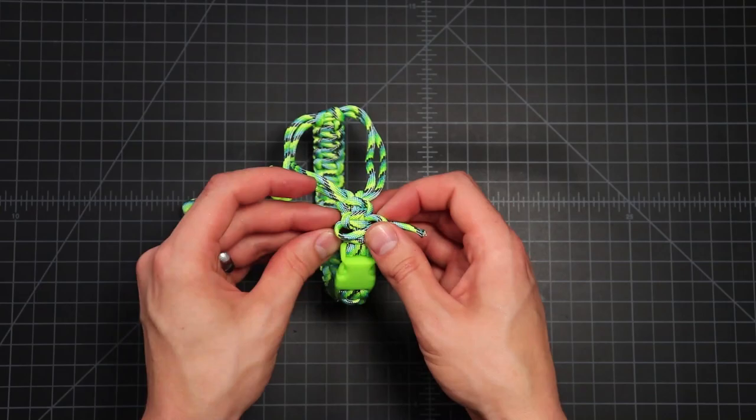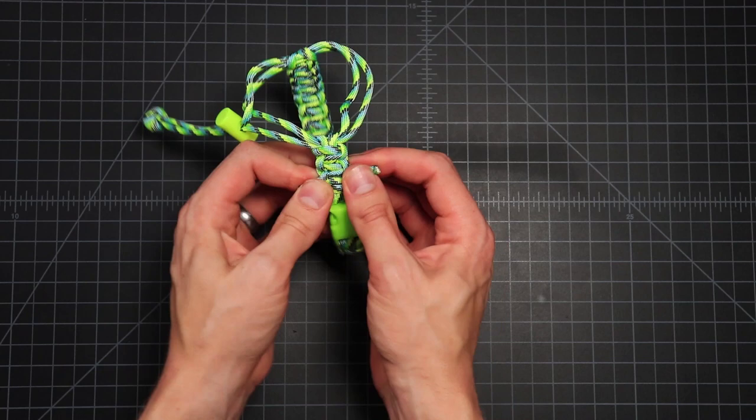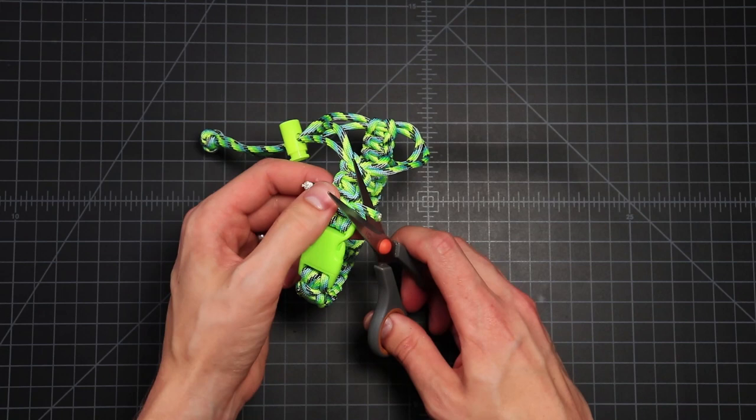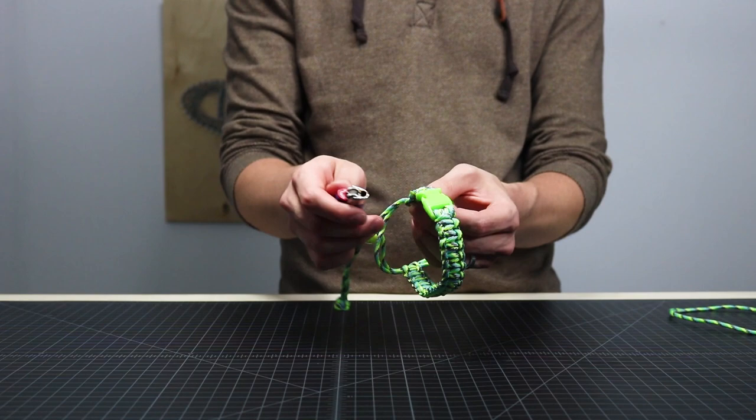Alright, so I was very close to running out of cord on that one. But I really could have made this portion a lot shorter than I did. If you're running low on paracord, you can just shorten it up a little bit. I'm going to clip those ends. Alright, so now that that's all done, let's try it on for size.